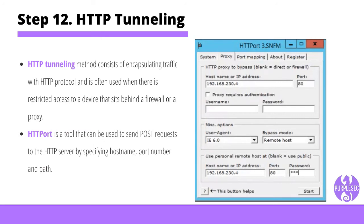Step twelve: HTTP tunneling. HTTP tunneling consists of encapsulating traffic with the HTTP protocol and is often used when there is restricted access to a device behind a firewall or proxy. The HTTP port tool can be used to send POST requests to the HTTP server by specifying hostname, port number, and path. As HTTP port's functionality has the ability to bypass HTTP proxies, the only obstacle is the enabled CONNECT method on the proxy itself. If the CONNECT HTTP method is enabled, creating an HTTP tunnel is easy; however, if it is disabled, a remote host must be used, requiring a significant amount of effort.